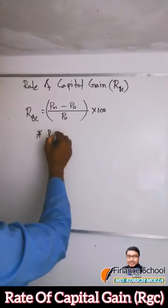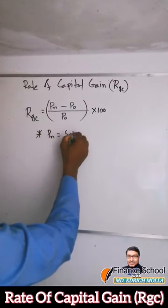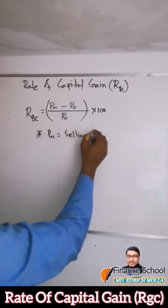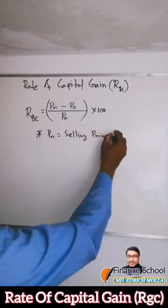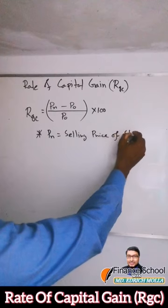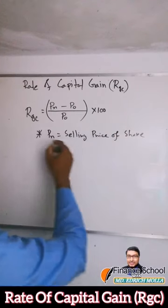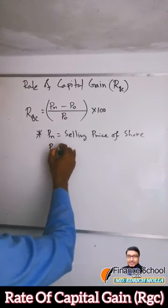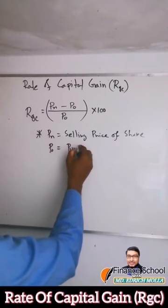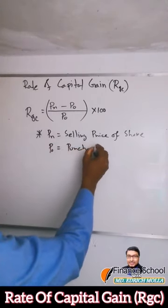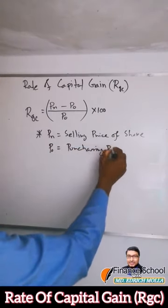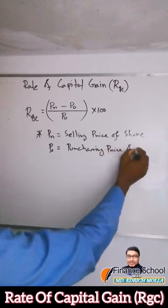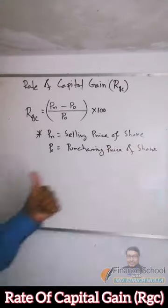As you can see, PN stands for the selling price of the share. On the other hand, P0 equals the purchasing price of the share. Hope you have enjoyed it.